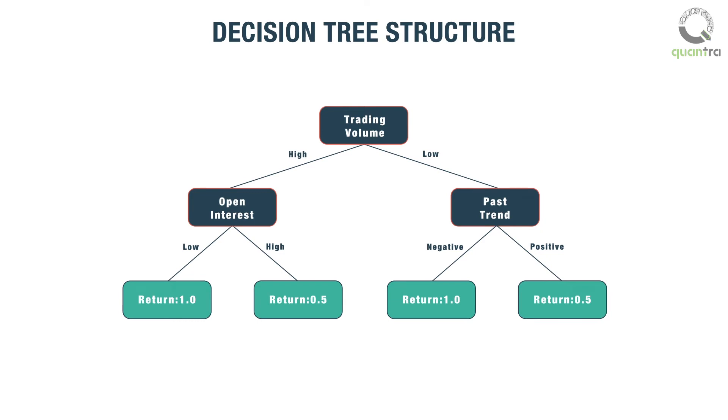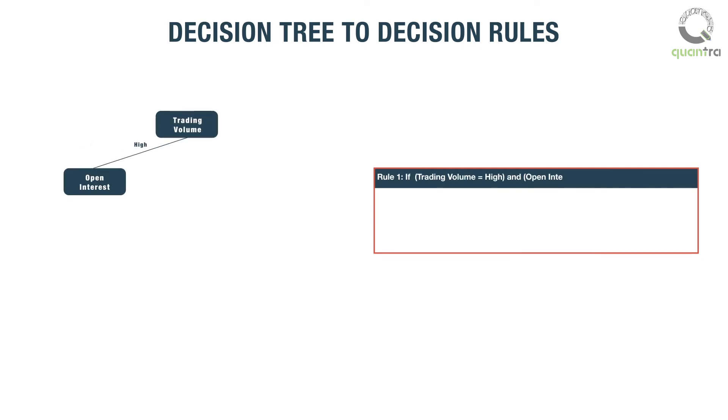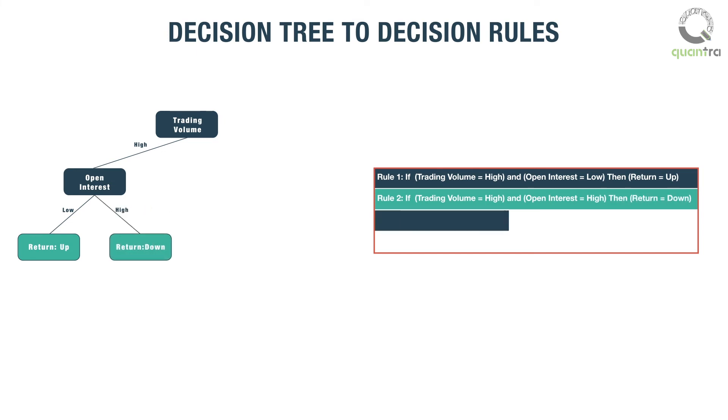In case of regression trees, the leaf node may hold an average value of the target class. A decision tree can be transformed to a set of rules. For example, as seen in rule number 1, if the trading volume is high and the open interest is low then the predicted return will belong to the up-class. If trading volume is high and open interest is also high then the predicted return will belong to the down-class.